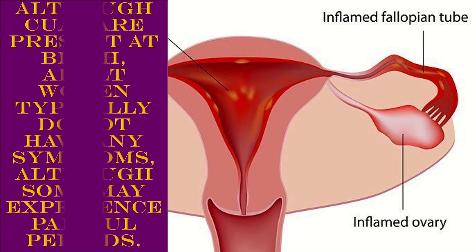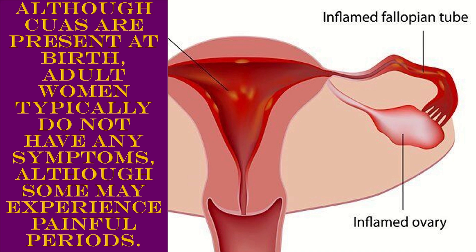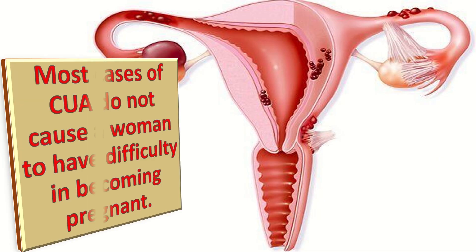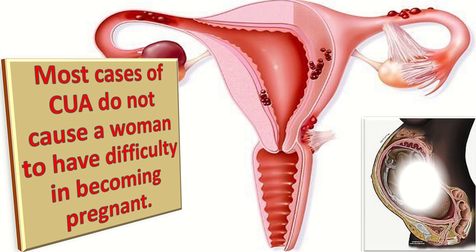Although congenital uterine anomalies are present at birth, adult women typically do not have any symptoms, although some may experience painful periods. Most cases do not cause difficulty in becoming pregnant and the outcome of pregnancy is generally good. However, these womb abnormalities are often discovered during investigations for infertility or miscarriage.